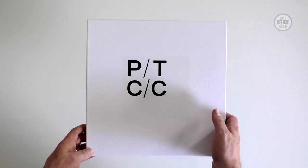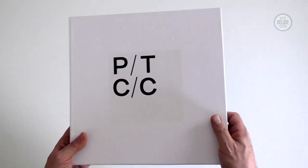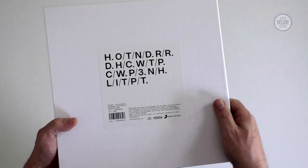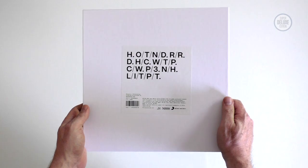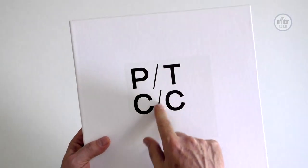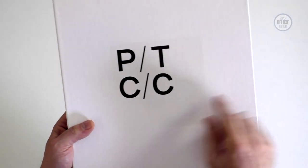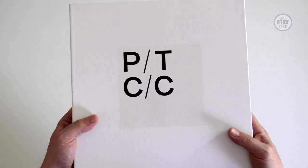There's a number of formats for this album all in a similar sparse black and white style. This is very much the theme, so you've got the PT for Porcupine Tree, CC for Closure Continuation.